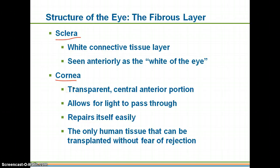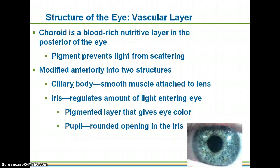The cornea repairs itself very easily, which is why if you get LASIK eye surgery you don't need any sutures — the cornea basically comes back down and forms a suction to the eye and repairs very easily. It is actually the only human tissue that you can transplant without fear of rejection.